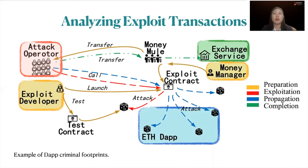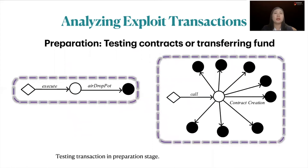We elaborate our measurement study and forensic analysis on real-world DApp attacks. In the preparation stage, attacker transactions serve two purposes: testing exploit contracts and transferring funds to bootstrap attacks. As an example, before attacking the vulnerabilities in the Fomo3D functions, the attacker created two test contracts to evaluate the exploit and contract creation functions — apparently performing their own software integration testing. We found this preparation stage exists in 85% of attack incidents, with an average of 23 transactions.